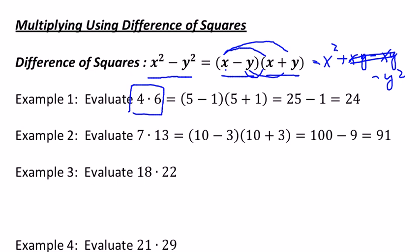Those two numbers, 4 and 6, are equidistant from a number in between them, 4 and 6.